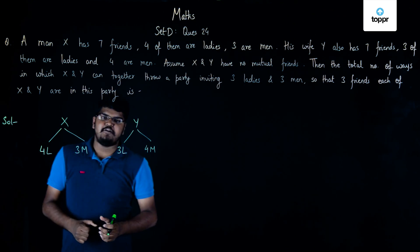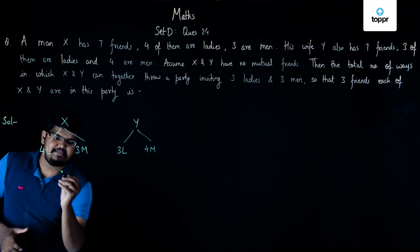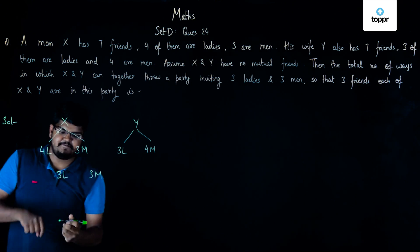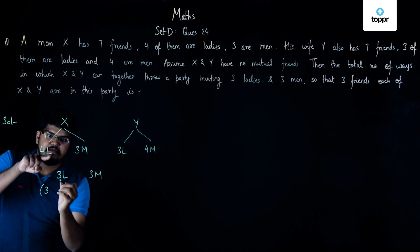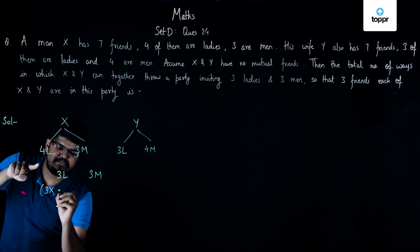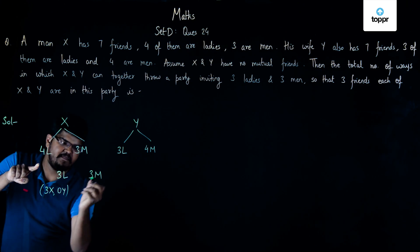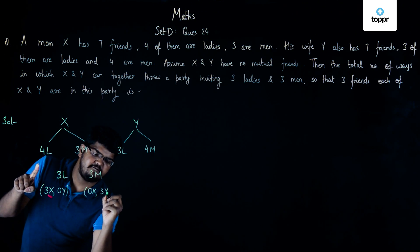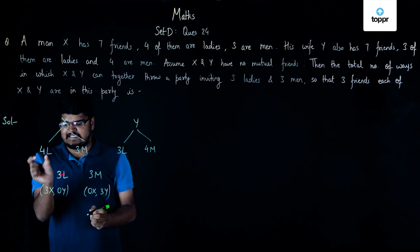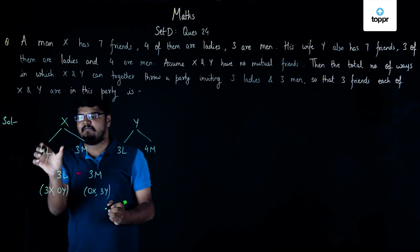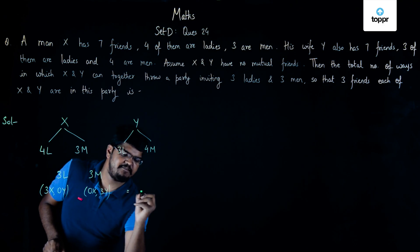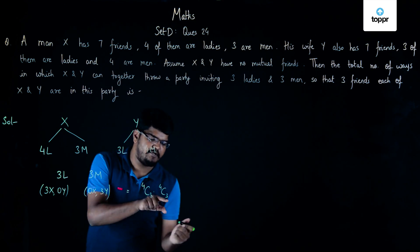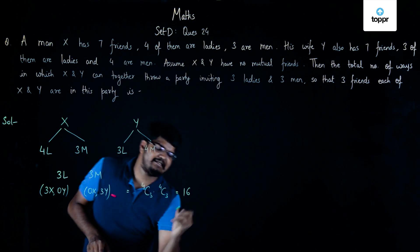In the first case, we select all three lady friends of X and zero lady friends of Y, and zero male friends of X and three male friends of Y. Since we select three ladies from X's four lady friends, this can be done in 4C3 × 4C3 ways, which equals 4 × 4 = 16.